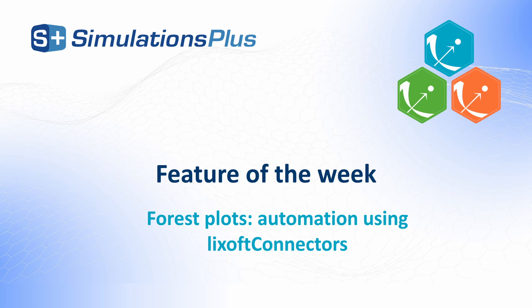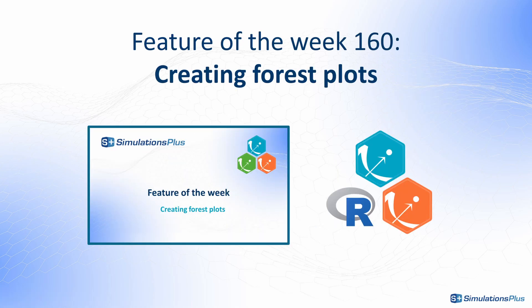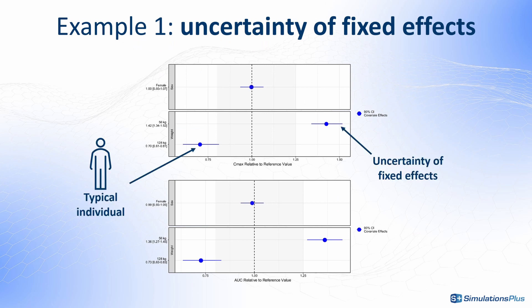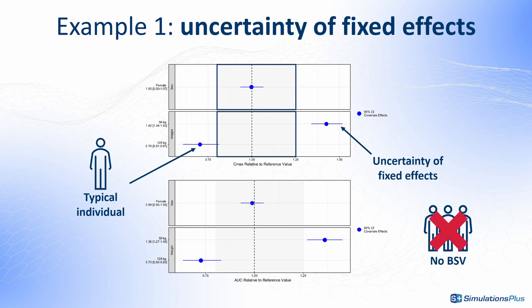Hello and welcome to the Feature of the Week. Our previous video, number 160, explained how to create forest plots using Monolix and Simulix interface in combination with R. We included only information about the uncertainty of fixed effects parameters, and the forest plots showed the probability of a typical subject's drug exposure to be inside a specific range of values. We didn't include between-subject variability, so these plots can't be used to predict individual exposure.